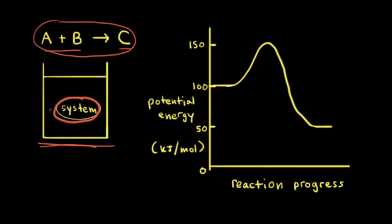Let's say we run the reaction and we put our hand on the beaker and we feel that the beaker is warm. If the beaker is warm, since the beaker is part of the surroundings, energy must have been transferred from the system to the surroundings. So heat flowed from the system to the surroundings, and that's an example of an exothermic reaction. So delta H is negative.